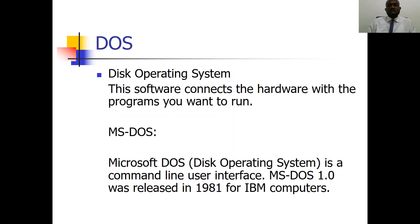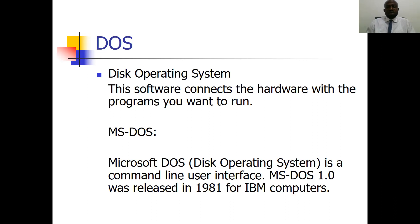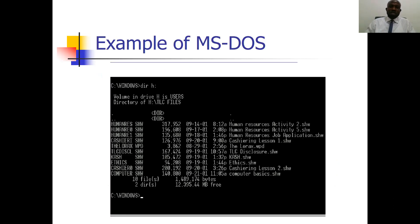MS-DOS — that's a disk operating system — is a typical example of system software. These software connect the hardware with the programs you want to run. A typical example is MS-DOS, that is Microsoft DOS, which is a command-line user interface. MS-DOS 1.0 was released in 1981 for the IBM computer. MS-DOS is not popular now because most operating systems we use today are the Windows operating system. If you are using MS-DOS, you will not see the graphical interface like what you see with Windows.